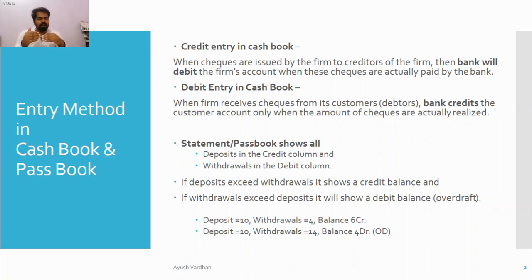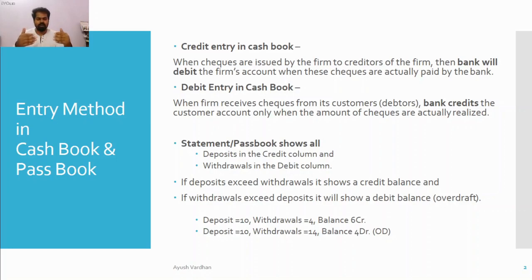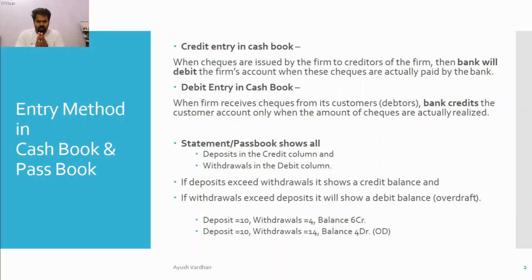When we make a debit entry in the cash book, the same is a credit entry in the pass book. What happens when someone is paying you something? You are getting a check — that is a payment. You have delivered some services or sold something, and the person, your debtor or customer, is paying you something. So you will make that as a debit entry in your cash book. But what happens in the pass book is that it is a credit entry.